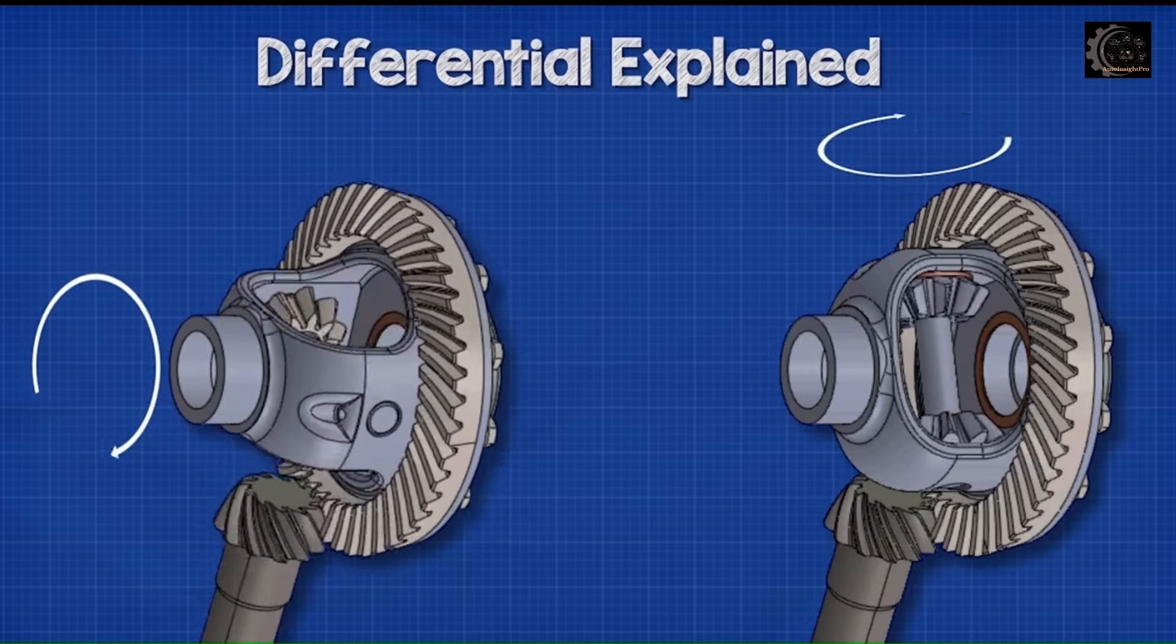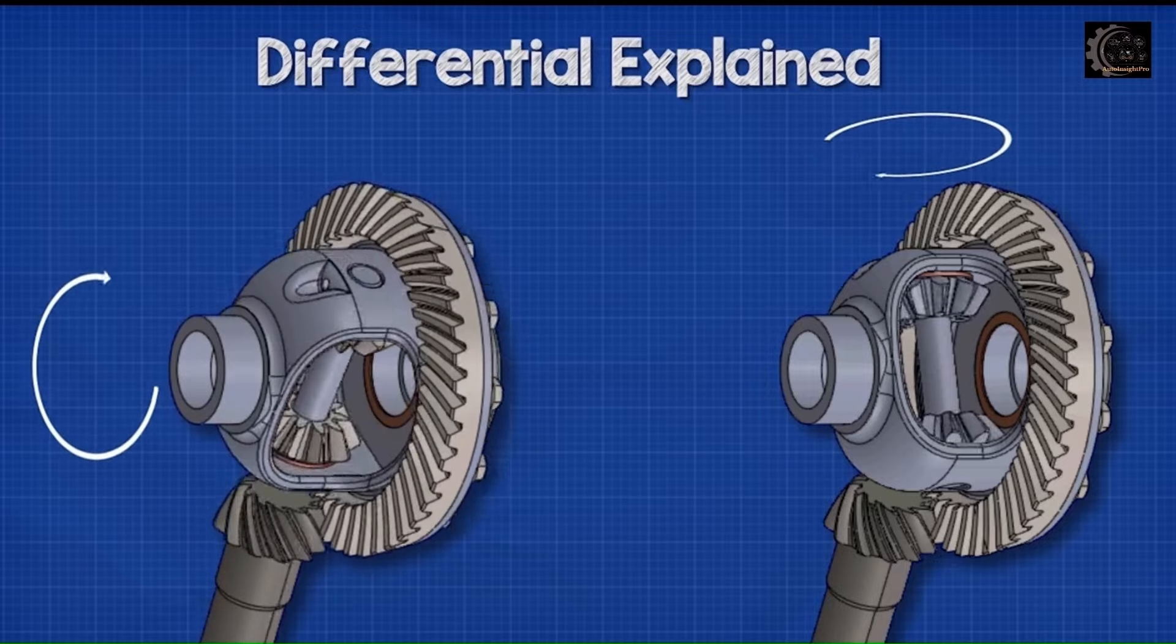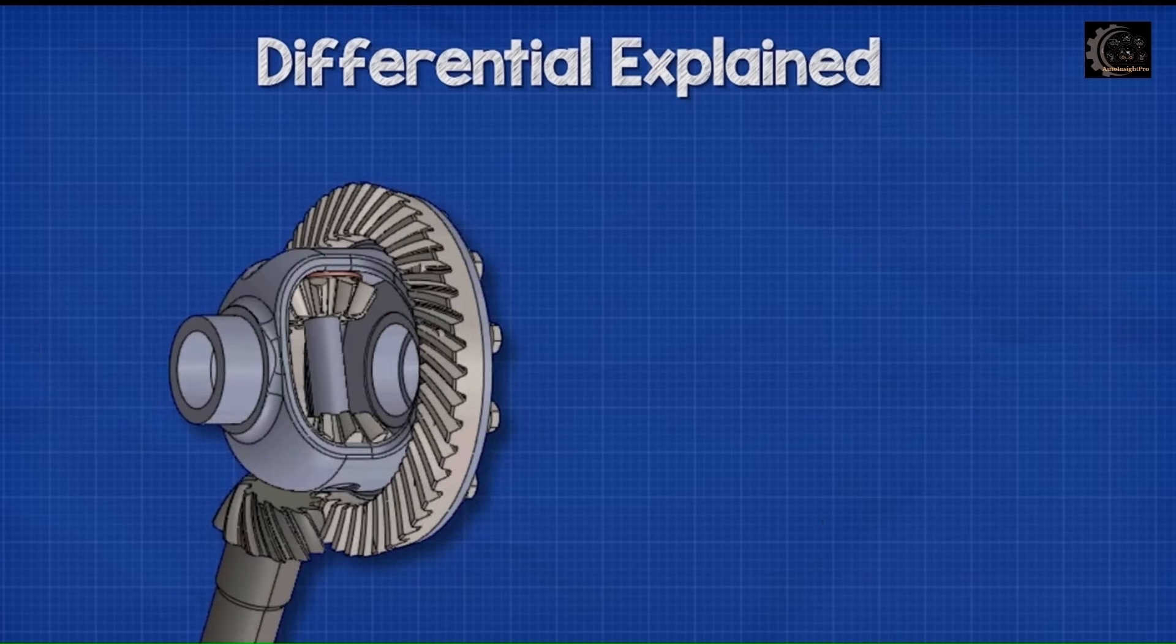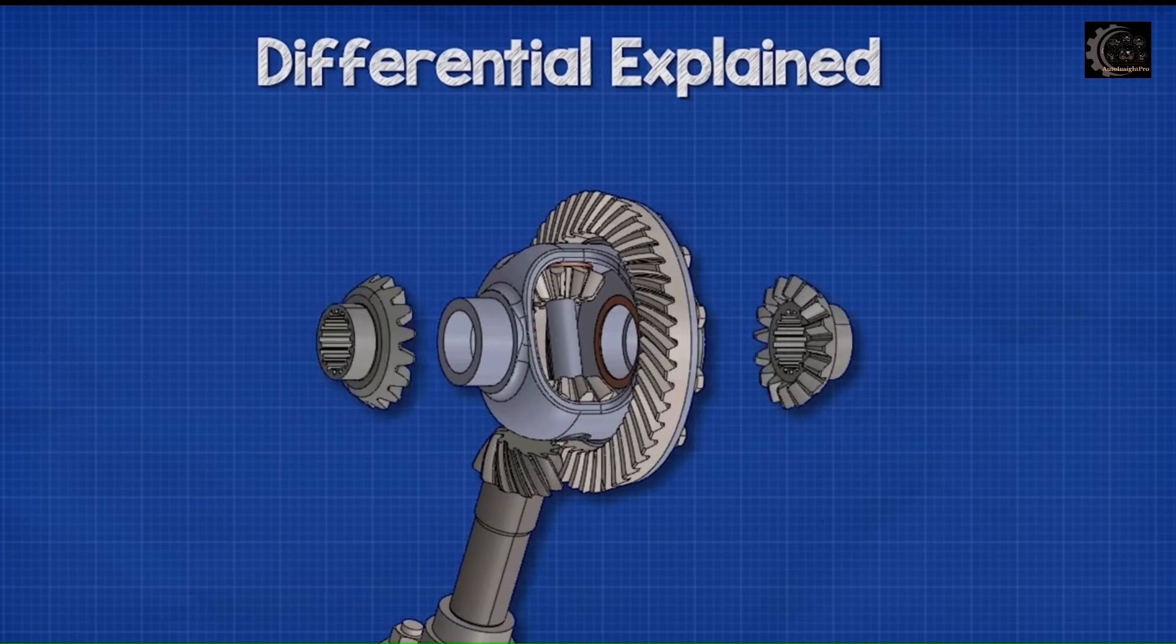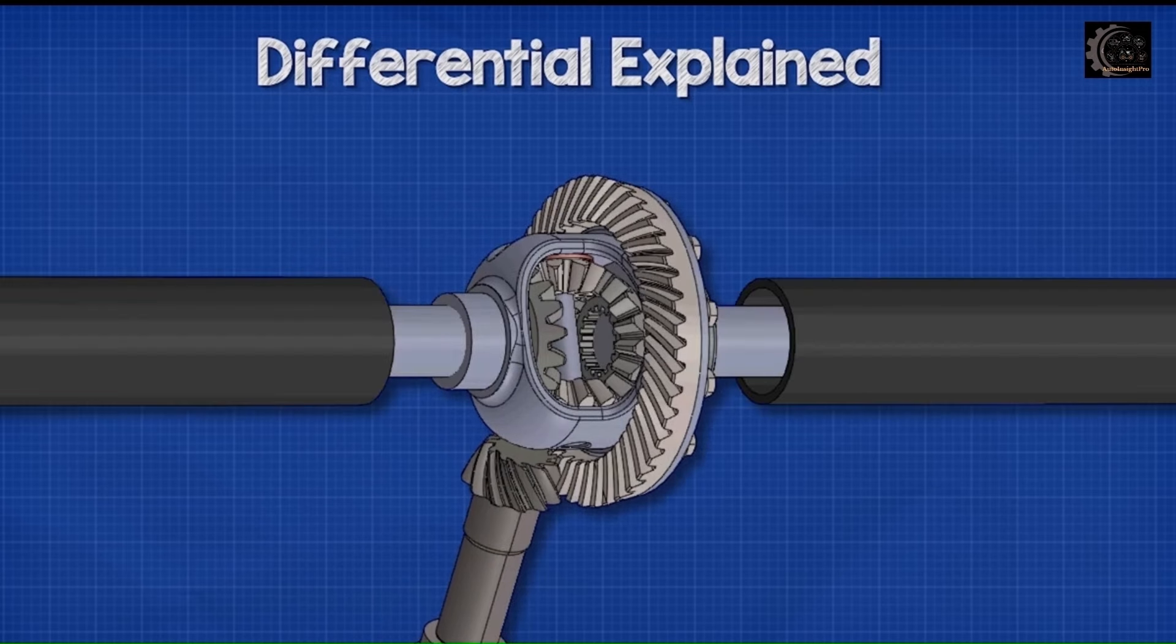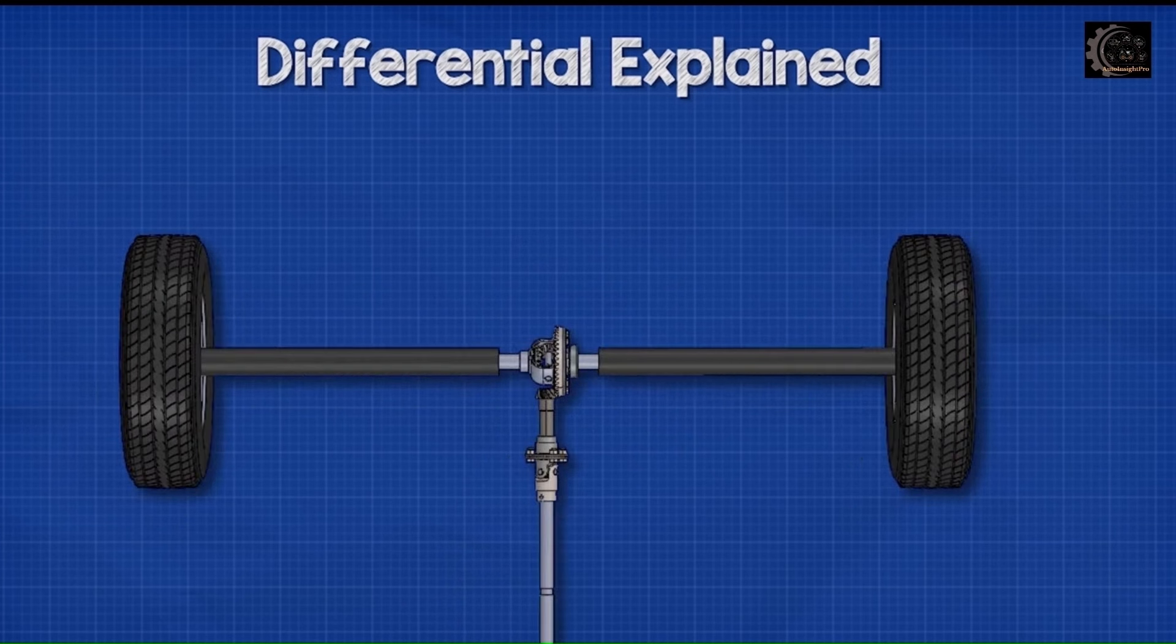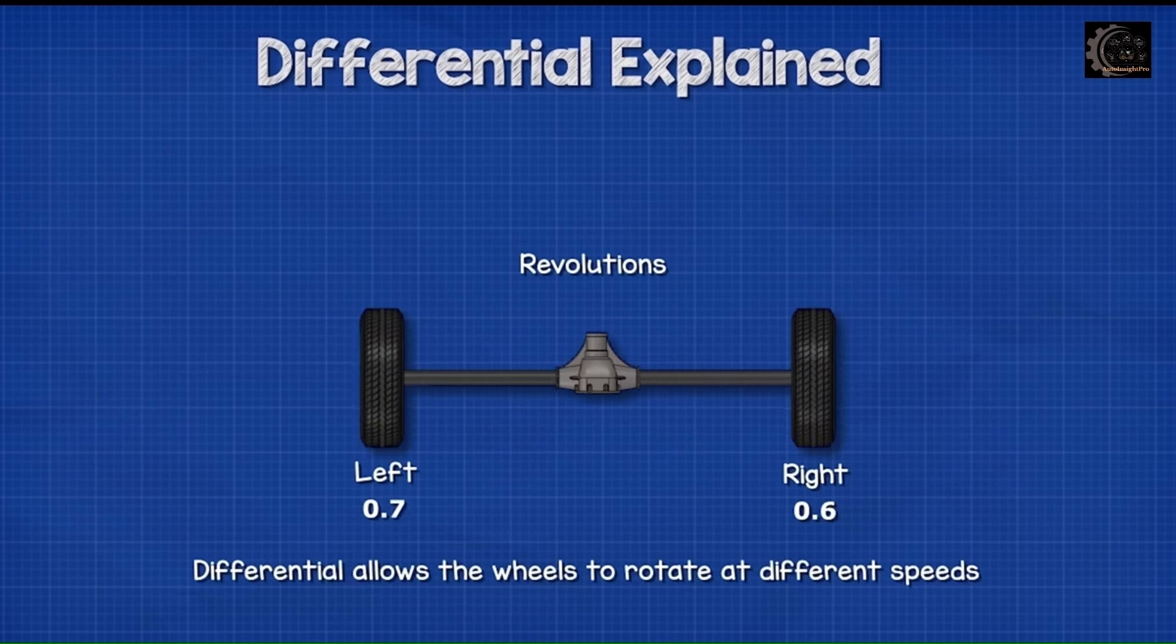The spider gears connect with two other gears known as the side gears. One connects to the left wheel axle and the other connects to the right wheel axle. The spider gears will allow the axles to rotate at different speeds, while still transferring torque and rotation to the wheels.